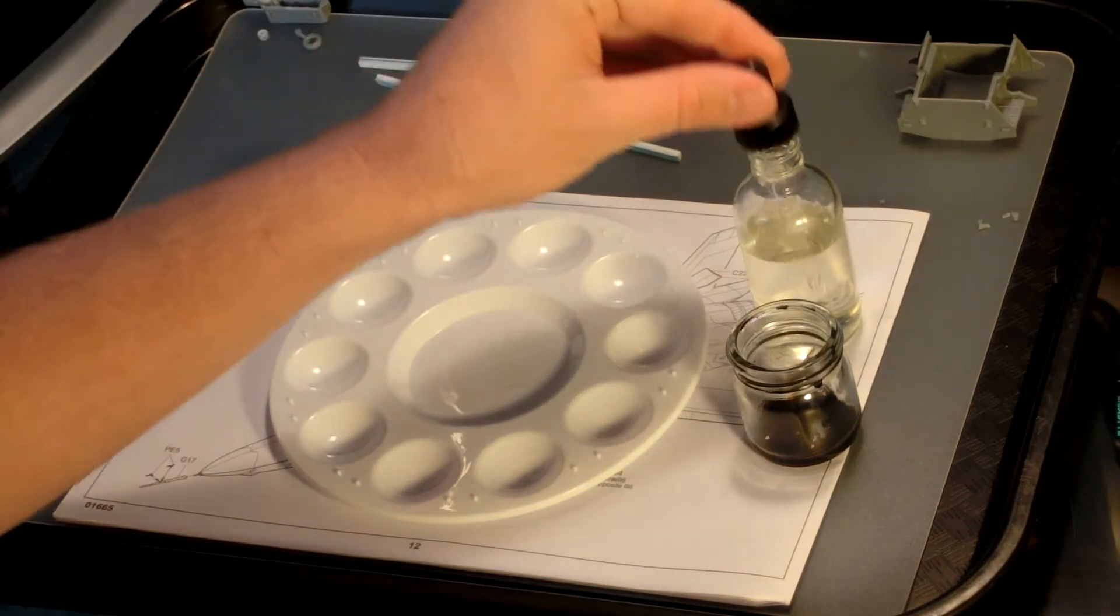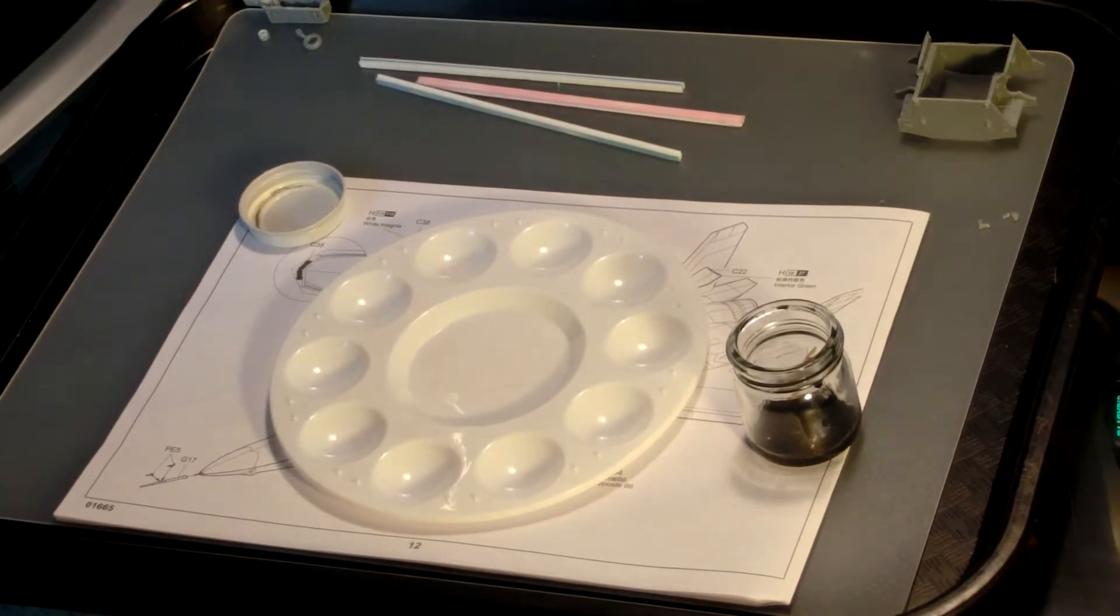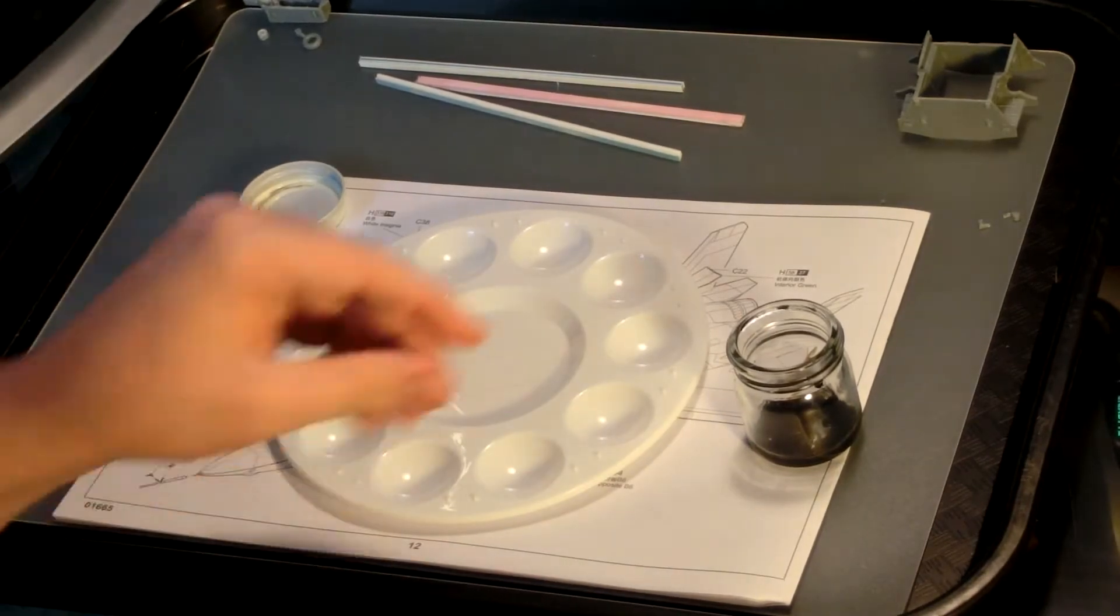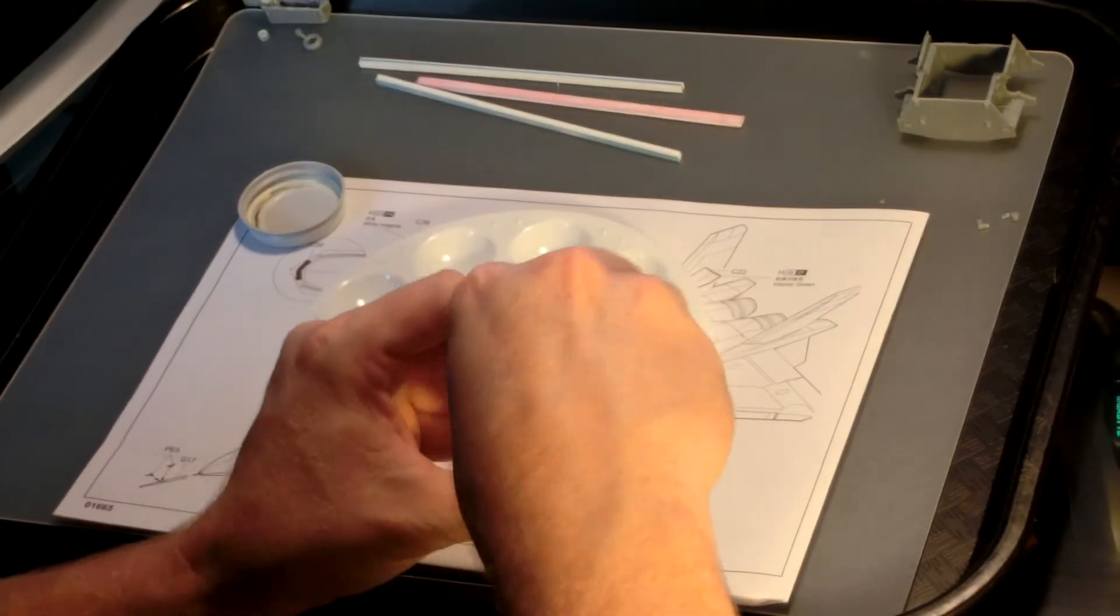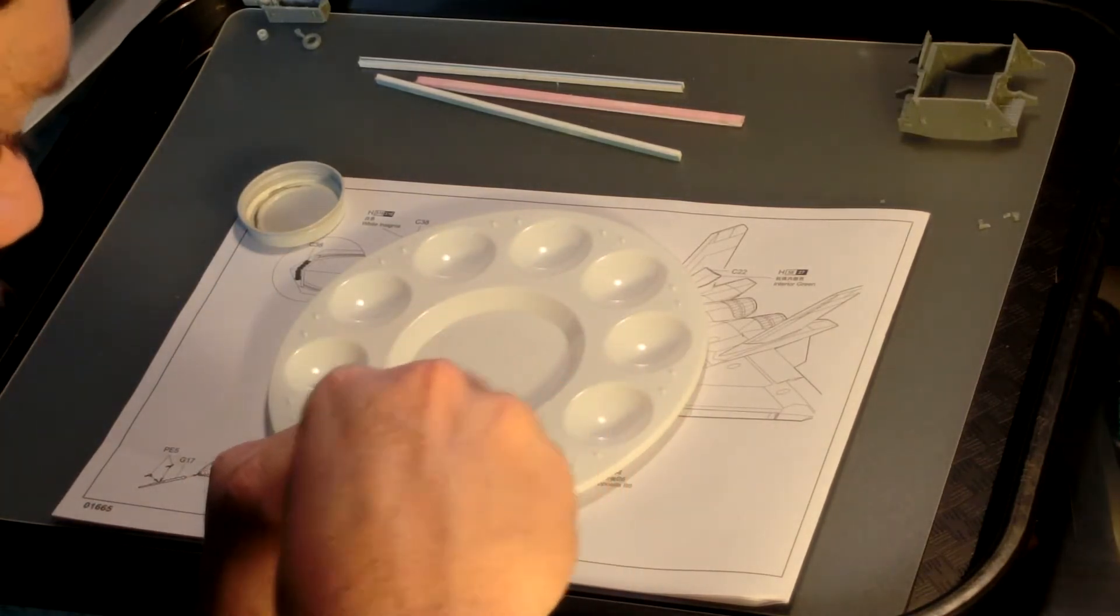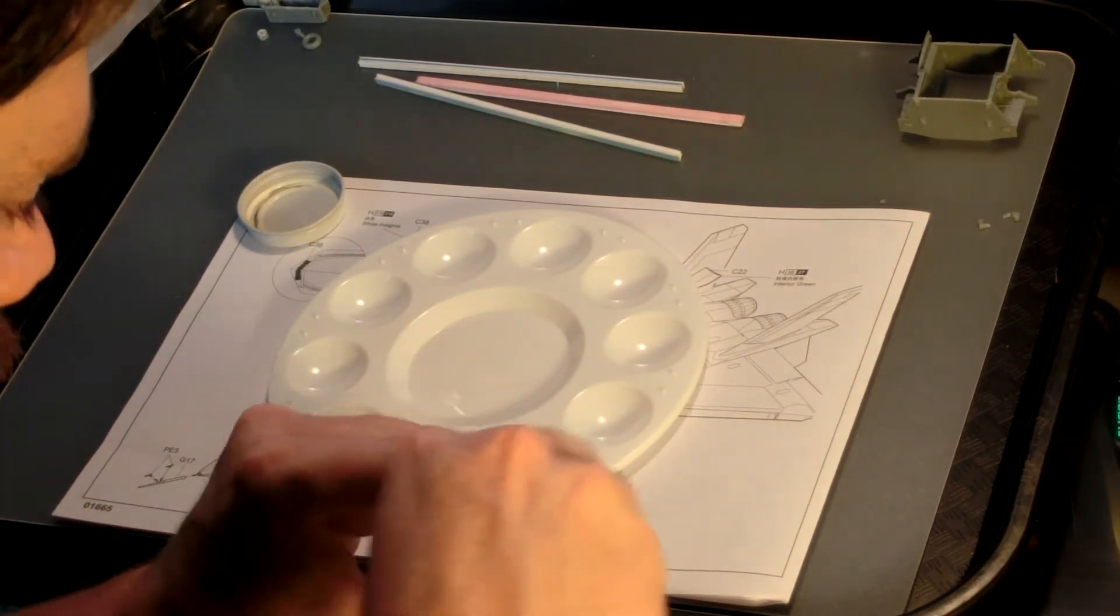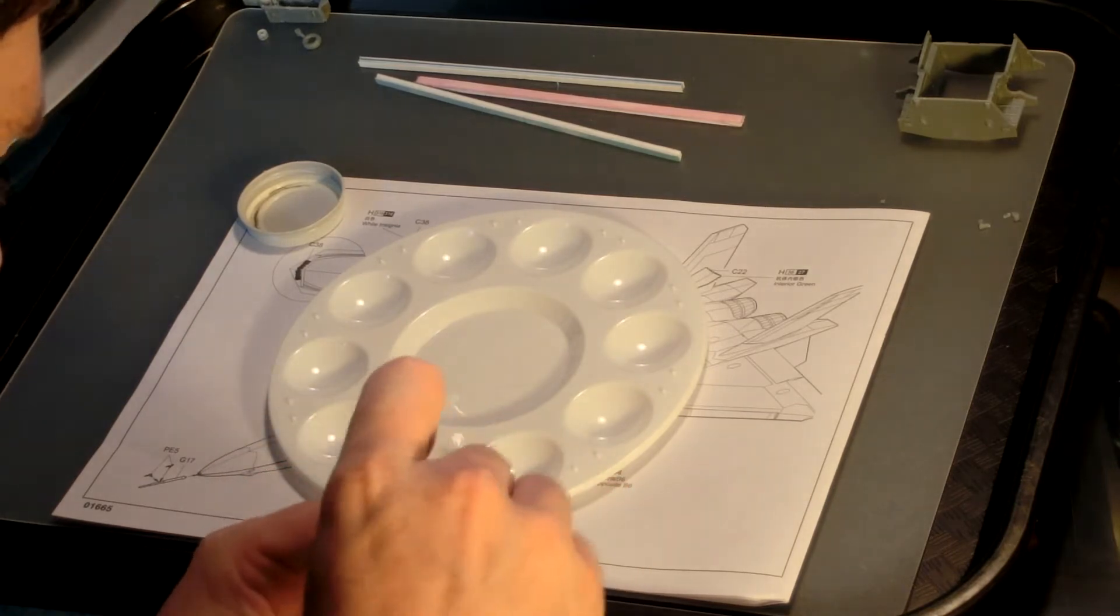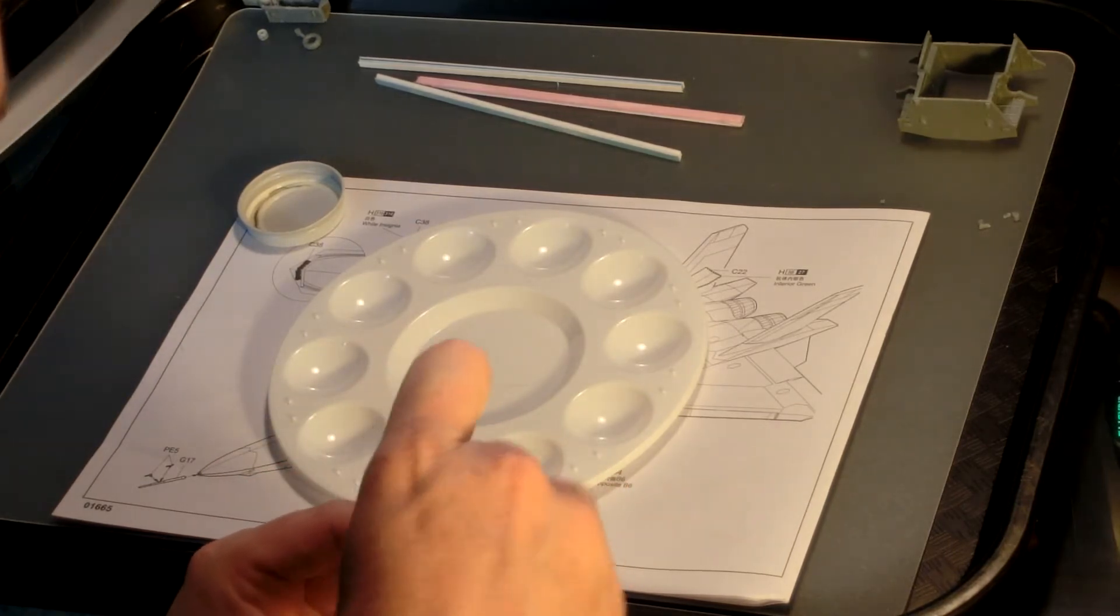You could also use a paintbrush for this to really get in there and stir, but be sure to wash your brush in the cleaning jar, not in the dropper bottle of paint thinner when done. As you mix it around, don't smash the bristles of your brush too much either, or you'll ruin its shape.